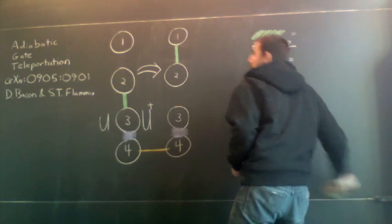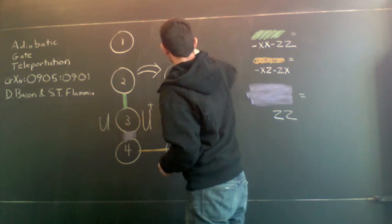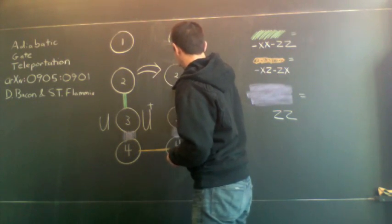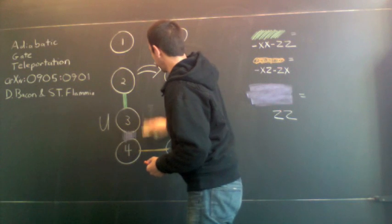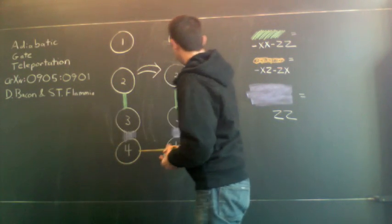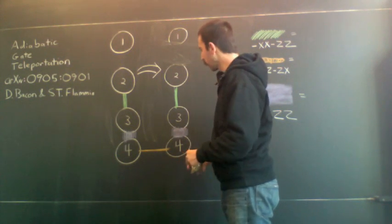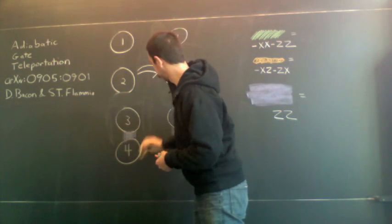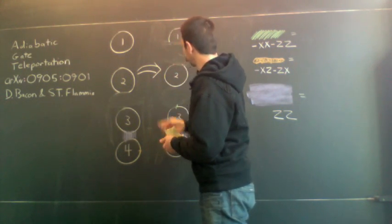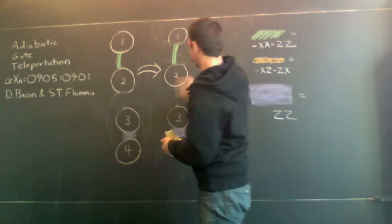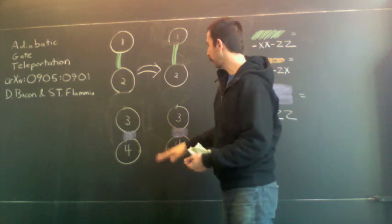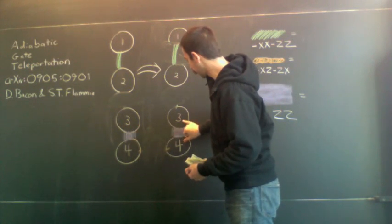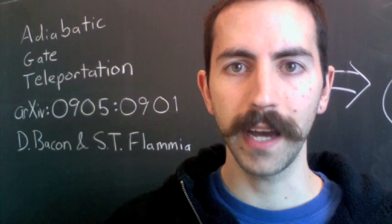Instead of having the information initially here, I put it between qubits two and three. With this initial setup, I can adiabatically transport it to the final setup. It turns out that with a constant gap, I can adiabatically teleport that controlled phase gate into the subspace spanned by the degenerate ground states. So that's adiabatic gate teleportation.